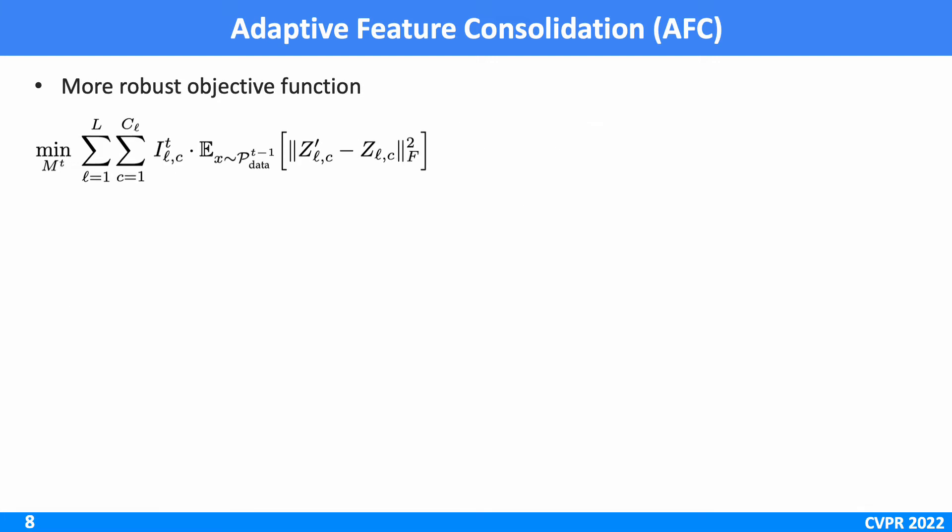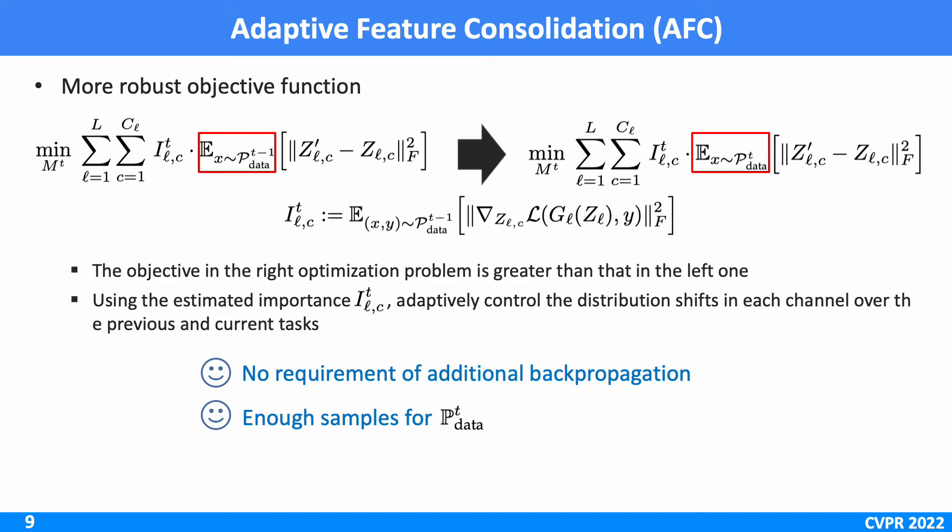Therefore, we also adopt the data in the current task together with the exemplar sets as written in the right optimization part. Also, we can theoretically show that the objective in the right optimization problem is greater than that in the left one.